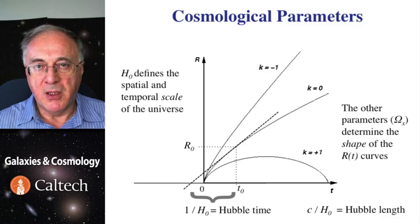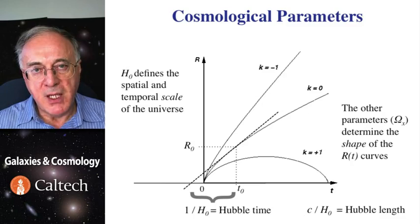The other parameters, omega matter, omega vacuum, and so on, determine the shape of the R of T curves and do not depend on Hubble's constant.